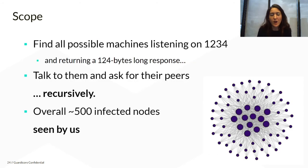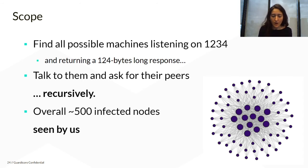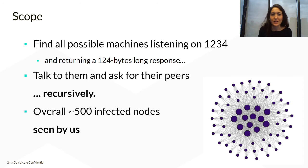Apart from targets, we also wanted to know how many were actually breached — how many nodes actually ran the malware at some point or another. So we took all the IP addresses that attacked our sensors, which were about 100. We also looked on Shodan for machines listening on port 1234 and fine-grained our search to only 124-byte responses, because this was the response length from the FritzFrog malware — the public key Base64.